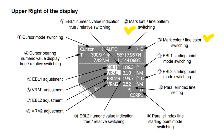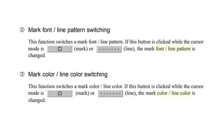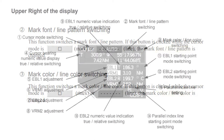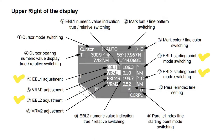Mark font and line pattern switching: this function switches the mark font and line pattern. If this button is clicked while the cursor mode is square mark or dashed line, the mark font or line pattern is changed. Mark color and line color switching: this function switches the mark color and line color. If this button is clicked while the cursor mode is square mark or dashed line, the mark color or line color is changed.